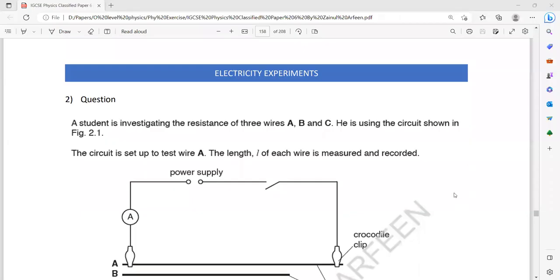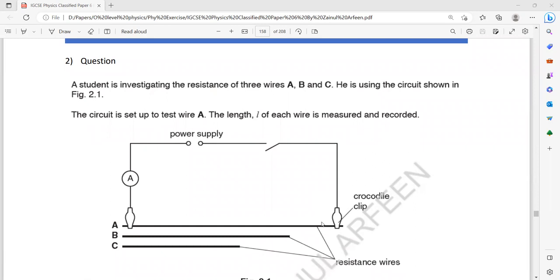So the electricity experiment, the experiments related to voltage, current and resistance. As you can see, a student is investigating the resistance of three wires: A, B and C.